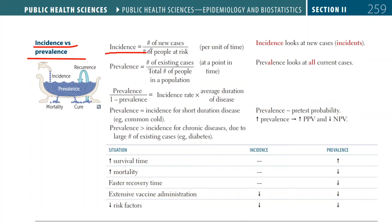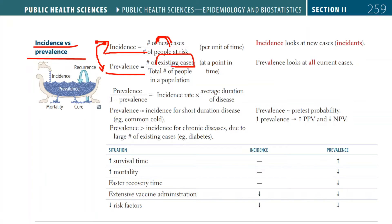Let's talk about incidence and prevalence. It's very easy to just take one at a time and talk about them, but it's even easier if we compare them together. The only real difference is that incidence looks at the number of new cases — basically a ratio of new cases to everyone who could develop a disease. Prevalence is not just new cases; it is all the cases — all of the people with the disease compared to the population currently being studied.